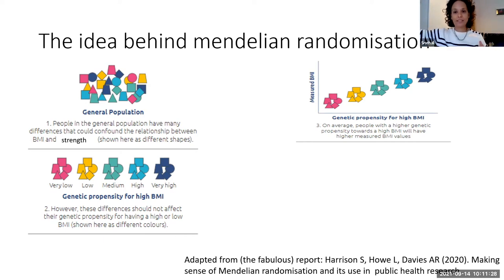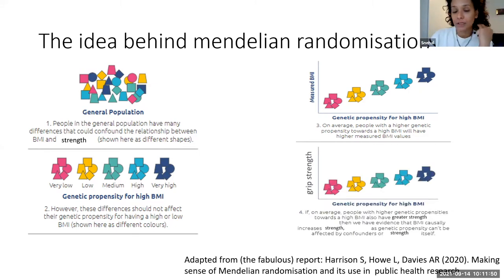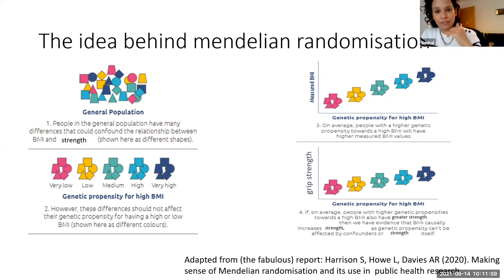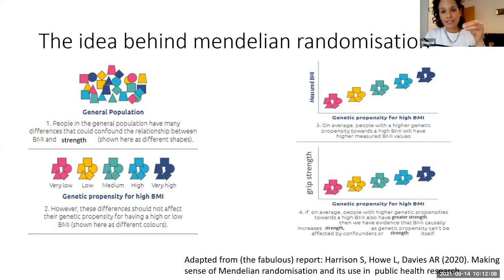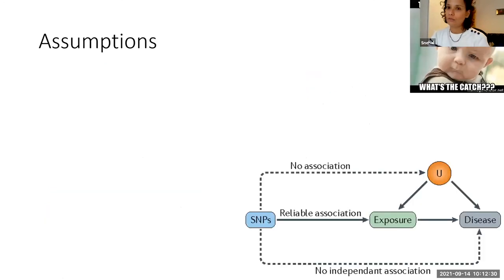If we draw a graph of genetic propensity for high BMI against actual measured BMI, on average people with a higher genetic propensity towards high BMI will have high measured values of BMI. It's not that your genes are deterministic — it's that on average, people with a higher genetic propensity for high BMI will have a higher BMI. So if people with a higher genetic propensity for high BMI also have greater grip strength, we have evidence that BMI is causally influencing strength.